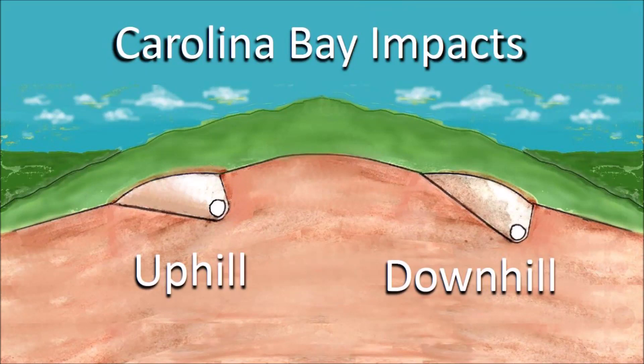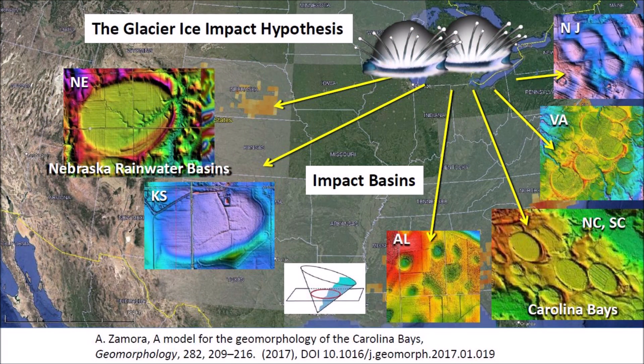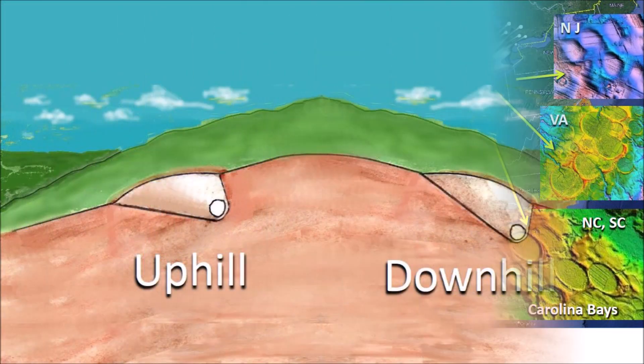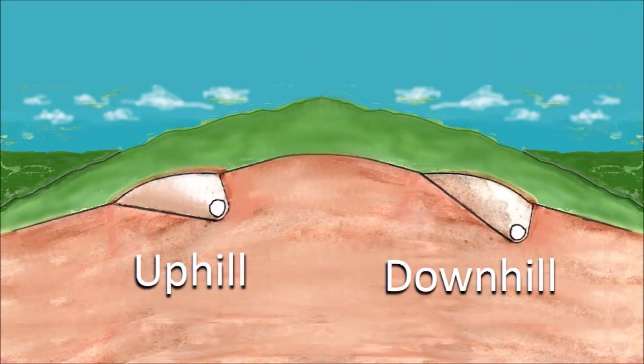Carolina Bays and other Younger Dryas secondary impact basins are usually elliptical because they originated as inclined conical cavities. However, impacts on inclined terrain are deformed in predictable ways by the force of gravity. Welcome to another edition of the Carolina Bay of the Day, where we study the secondary impacts made by the glacier ice boulders ejected by one or more extraterrestrial impacts on the Laurentide Ice Sheet. Today, we will examine the mechanism of deformation of Carolina Bays by viscous relaxation on inclined terrain.